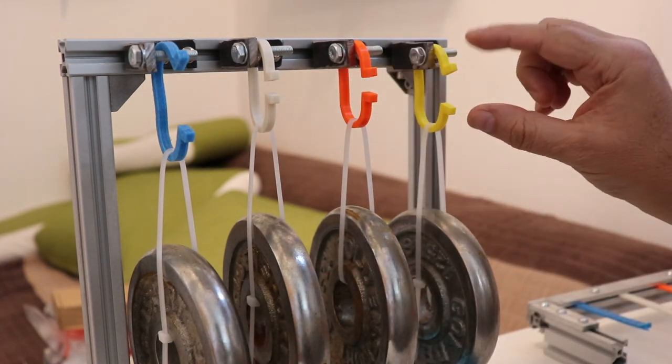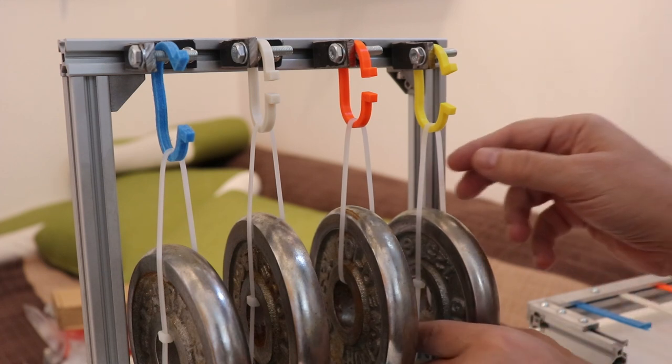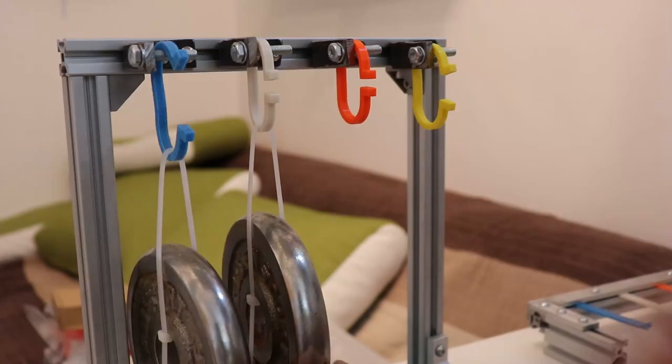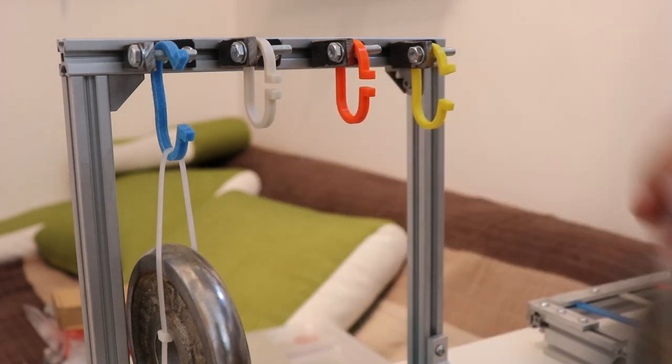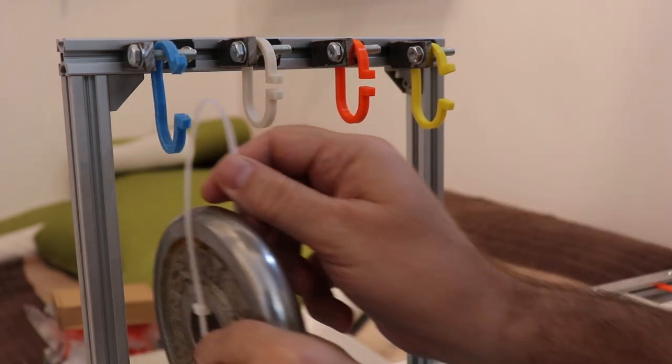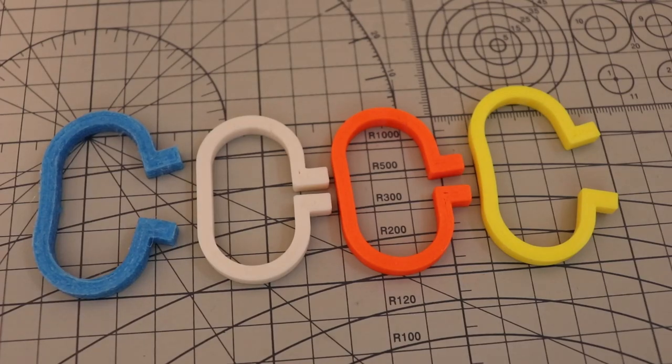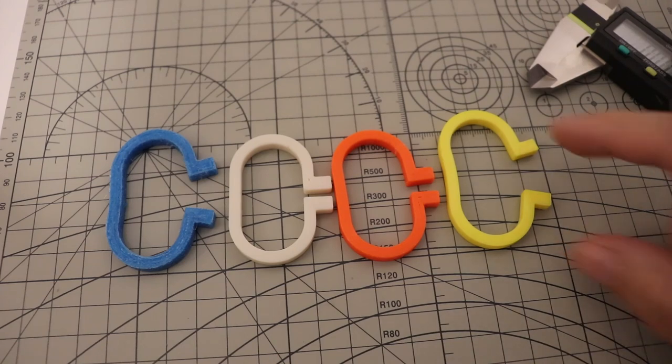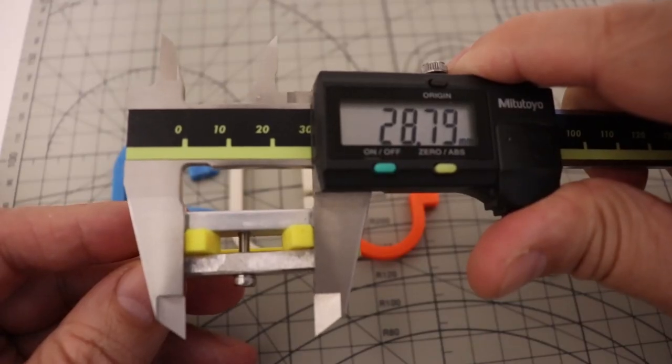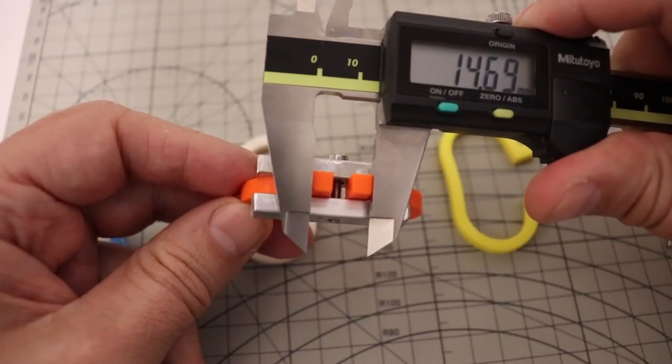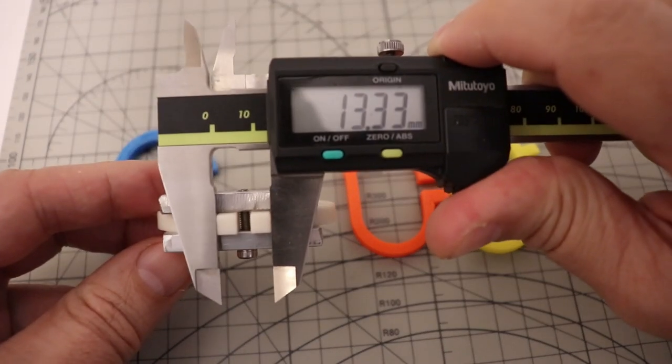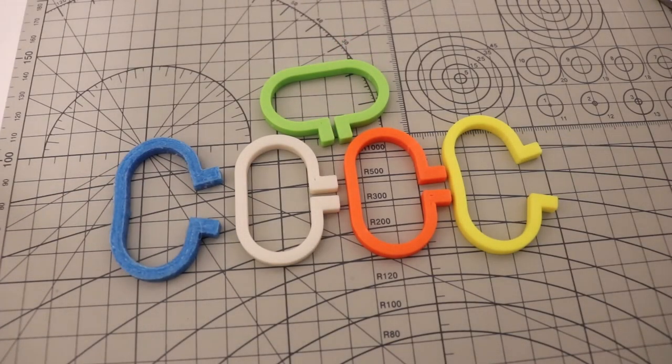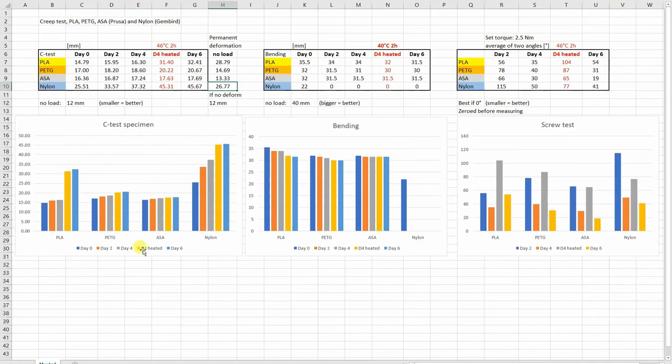And before I show you the results I want to take off these loads and create some time lapse maybe one hour to see will they get back their original shape. This is one hour time lapse. And now 4 hours later I want to measure the permanent deformation. PLA 28.79, PETG 14.69, ASA 13.33, nylon 26.77 and this is how it looks like without load.